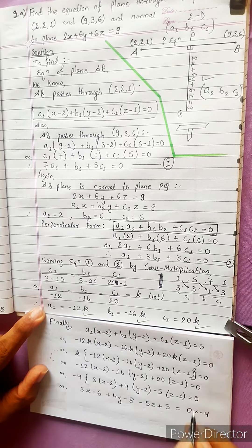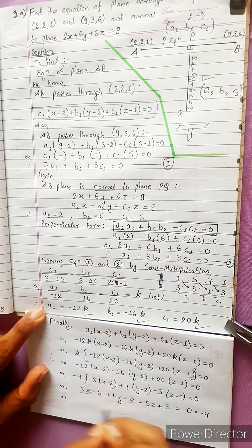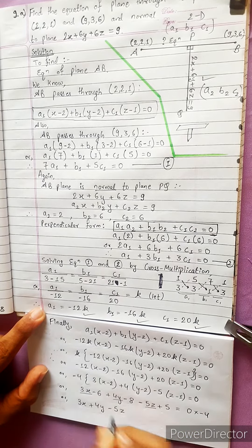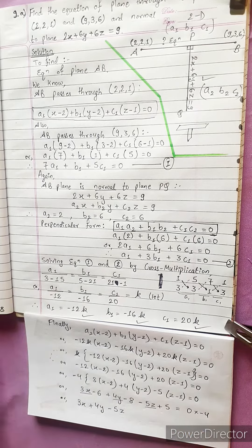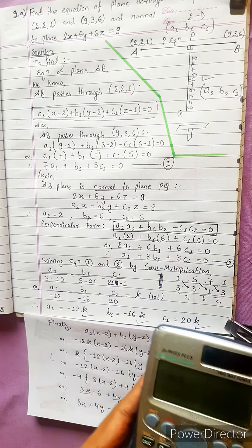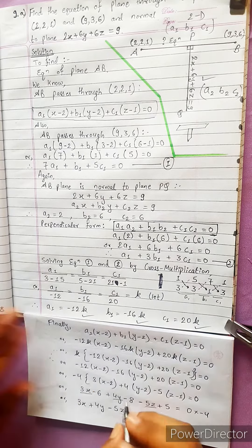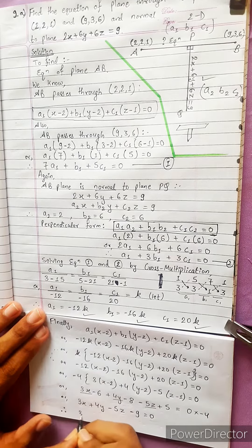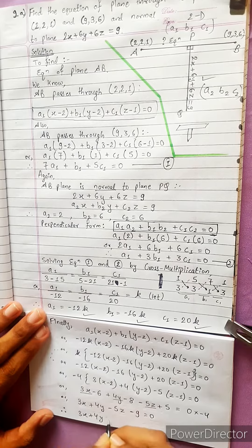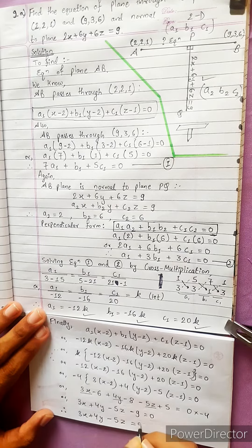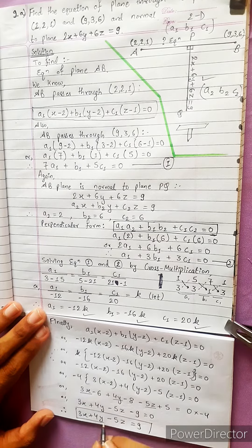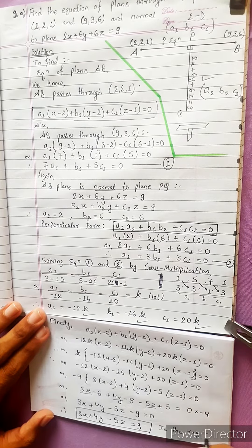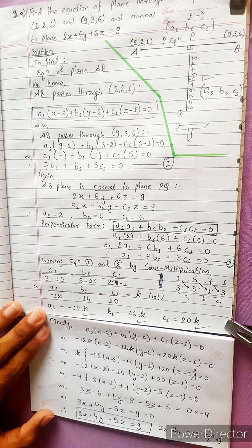-3x - 4y + 5z + 9 = 0. Multiplying by -1: 3x + 4y - 5z - 9 = 0. Therefore 3x + 4y - 5z = 9 is the required equation of plane.